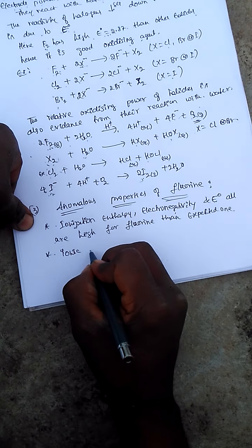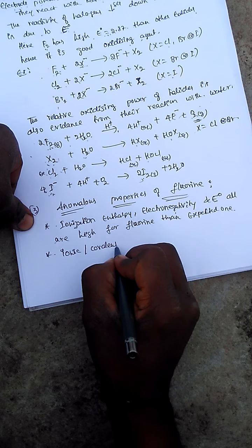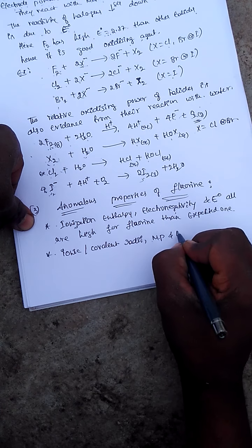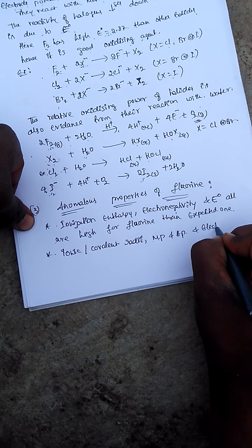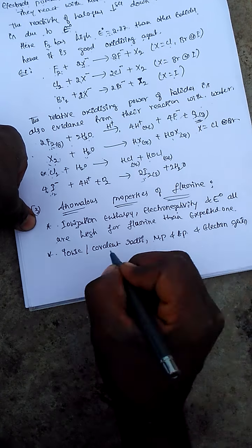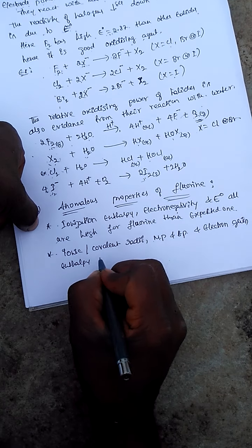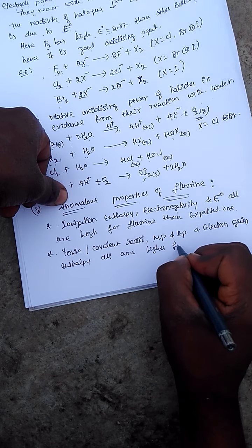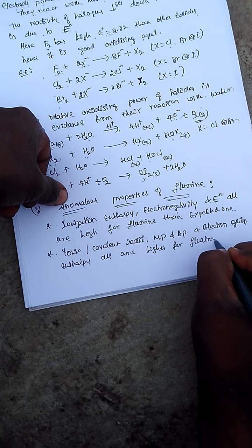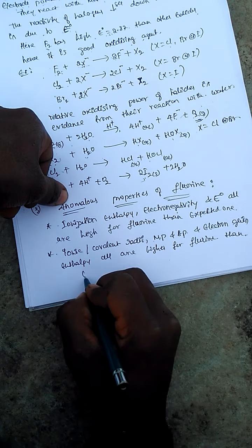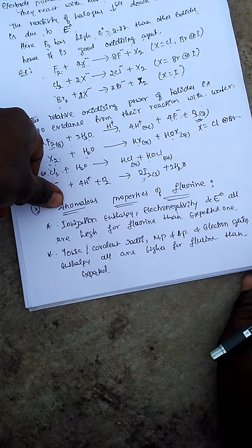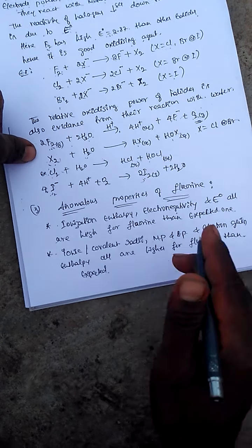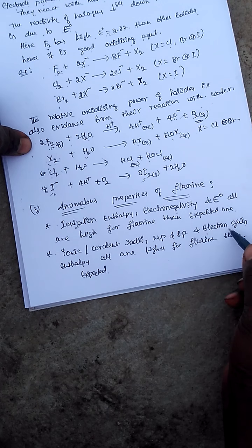Additionally, ionic radius, covalent radius, melting point, boiling point, and electron gain enthalpy are all higher for fluorine than expected.